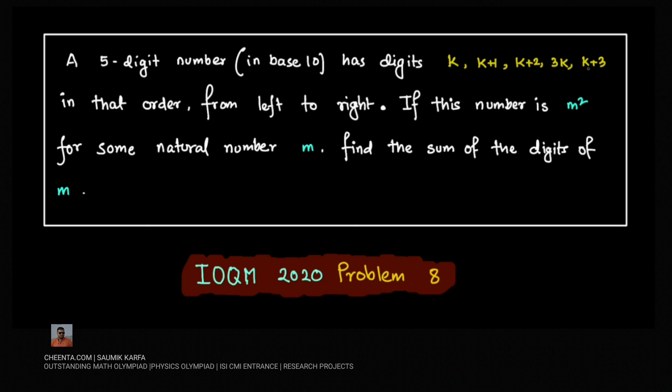So k+3 would be the units digit, this is the tens digit, this is the hundreds digit, and so on. If the number is m² for some natural number m, we need to find the sum of the digits of m.